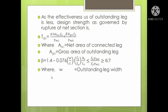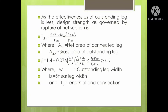In the beta equation, W is the outstanding leg width, BS is the shear leg width, LC is the length of the end connection, and T is the thickness. How to calculate these parameters will be demonstrated through numerical examples.